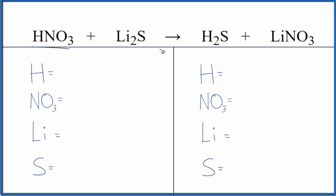Let's take a look at the type of reaction first. It looks like the hydrogen ends up with the sulfur and the lithium and the nitrate there together. So that's going to be a double displacement reaction. That's the type of reaction.